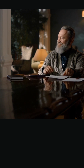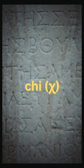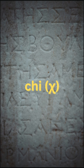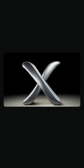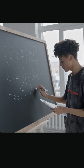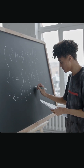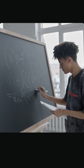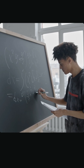They borrowed the Greek letter chi. Later, when the texts got translated into Latin, chi turned into the letter X. So yeah, the reason you're stuck solving for X in algebra is basically because medieval Spaniards couldn't pronounce 'shea.'